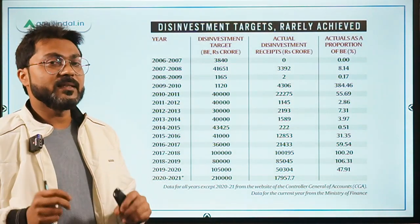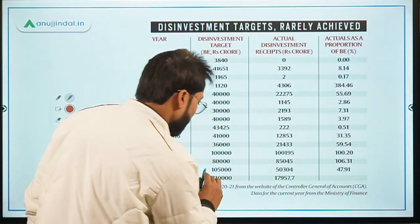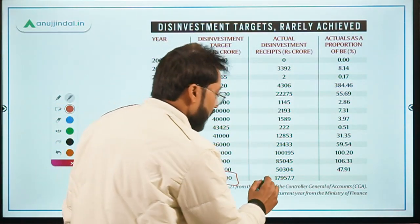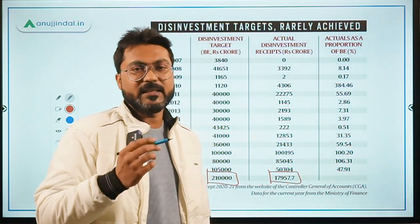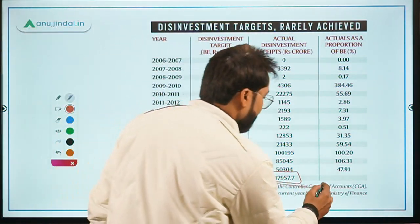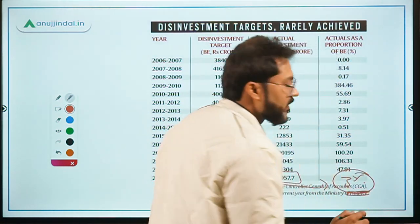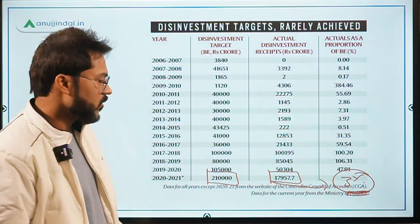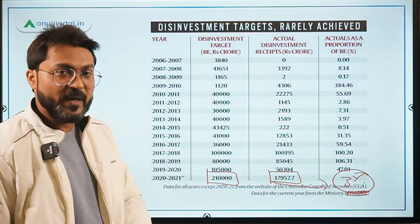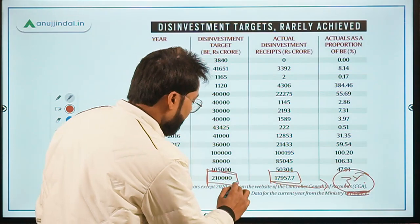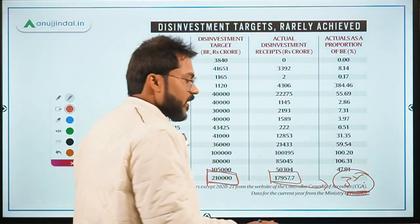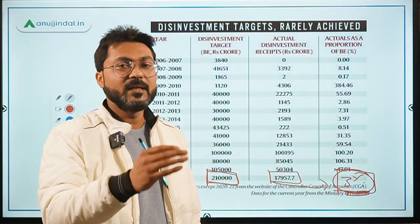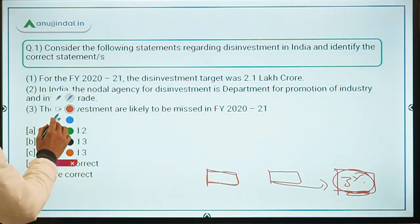In the 2020 budget, the disinvestment target was 2.1 lakh crore (₹2,10,000 crore). However, till now only ₹17,957.7 crore of disinvestment has been achieved — approximately 3% of the target. This shortfall is largely because COVID-19 and the resulting lockdown disrupted plans this year. The Ministry of Finance indicates only about 3% of the disinvestment target will be achieved by the end of this financial year.